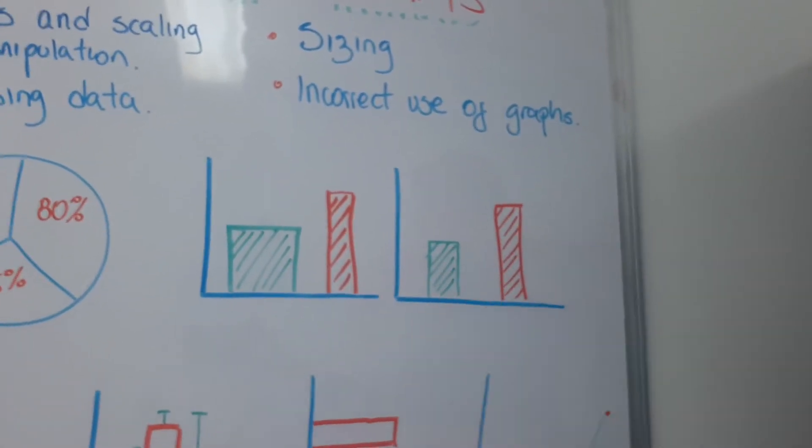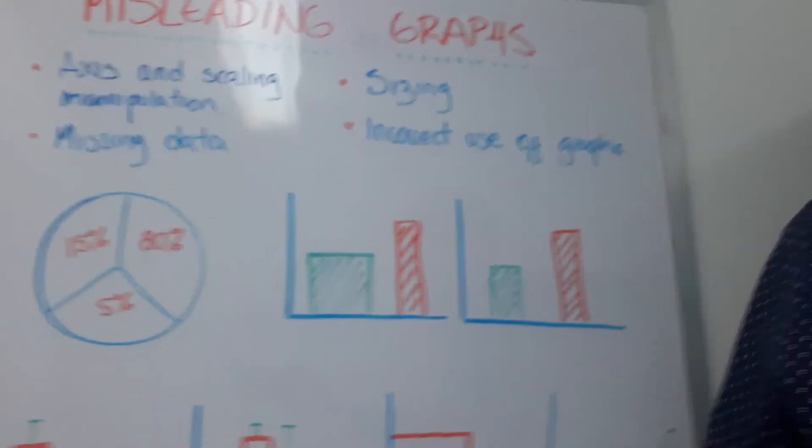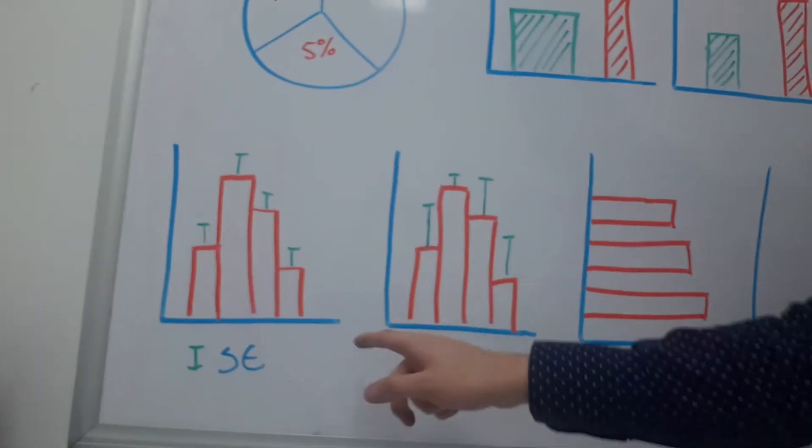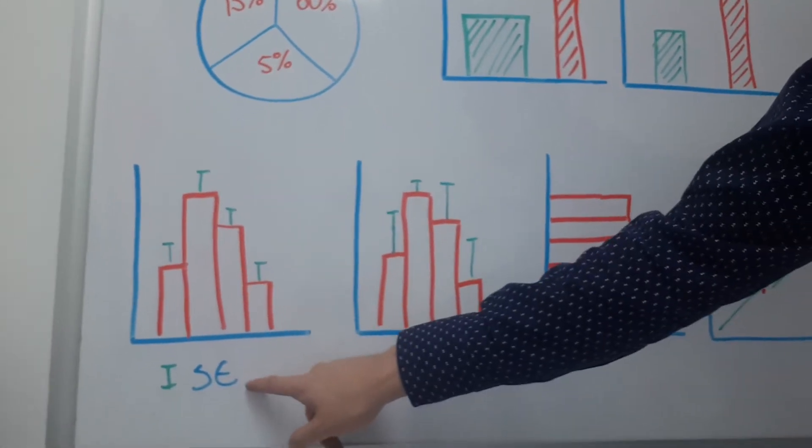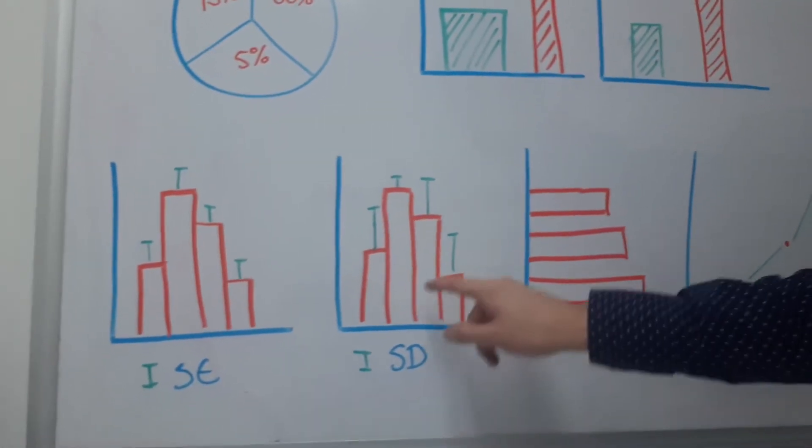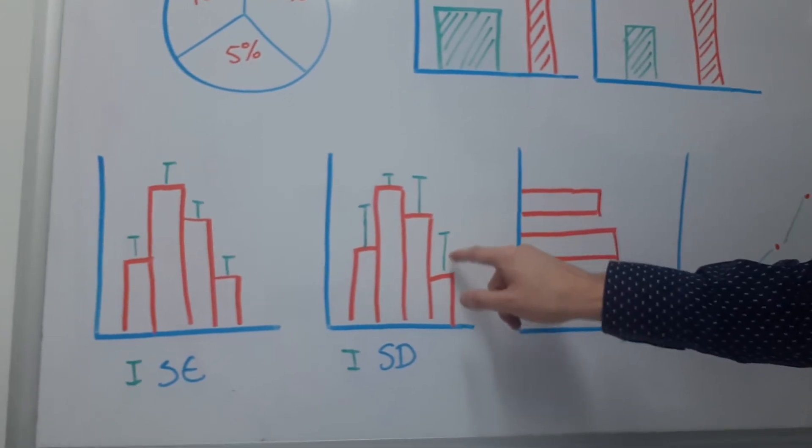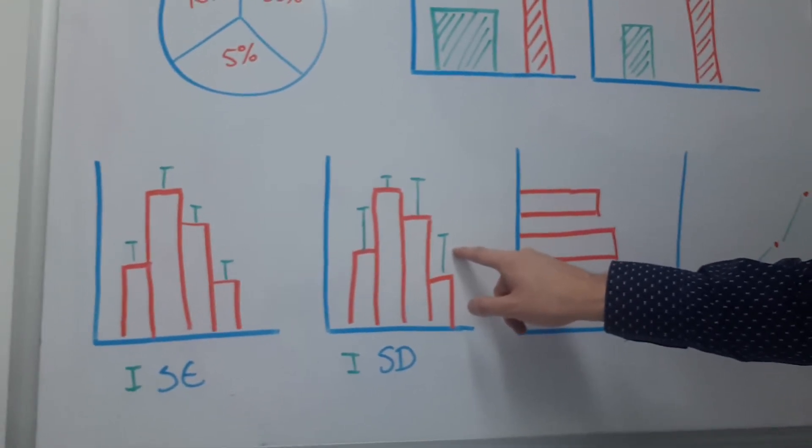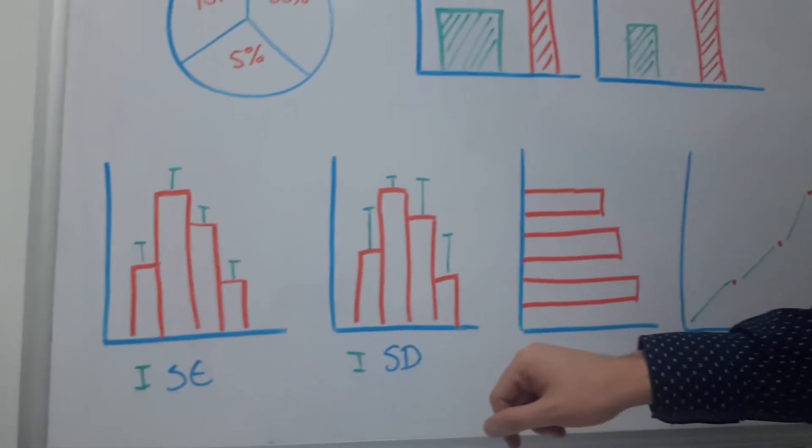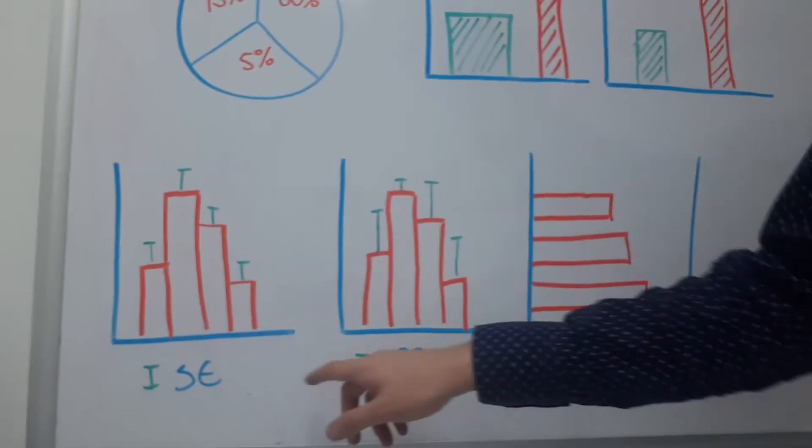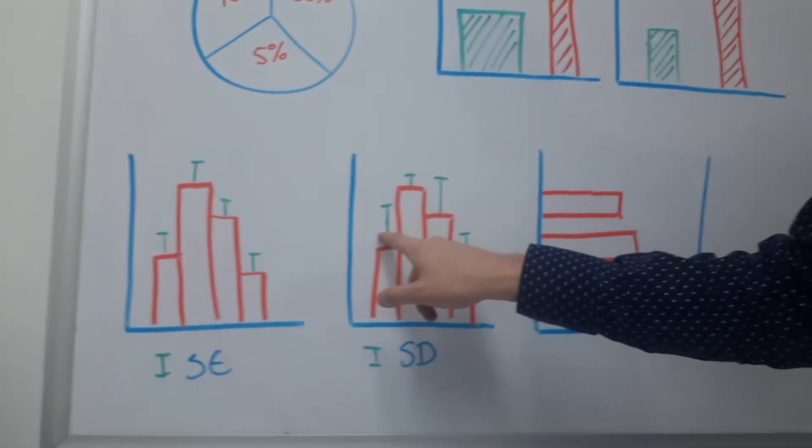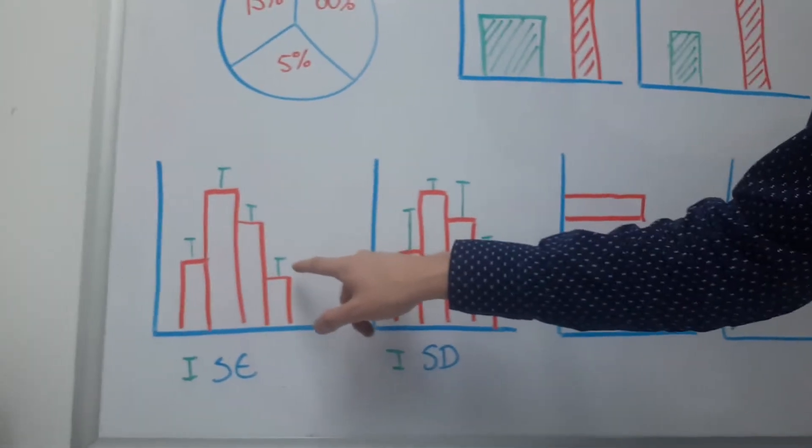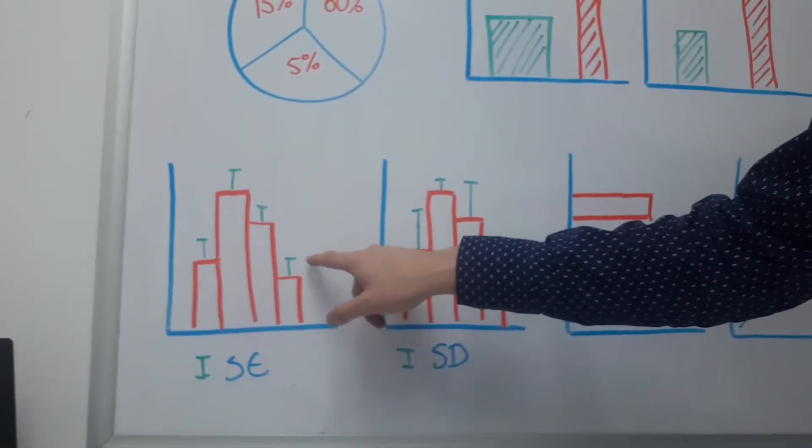So this is another form of manipulating. Here I have two graphs, one with the standard error and one with the standard deviation, according to this line, this green line over the bars. And it's a form where you can see that, for example, here the line is shorter than this one.